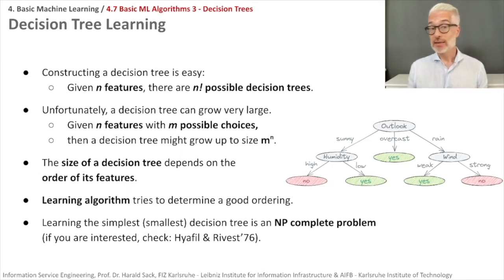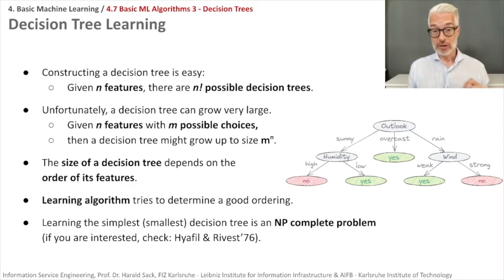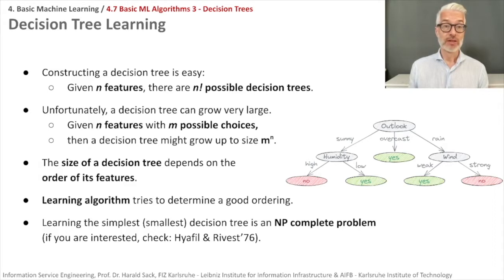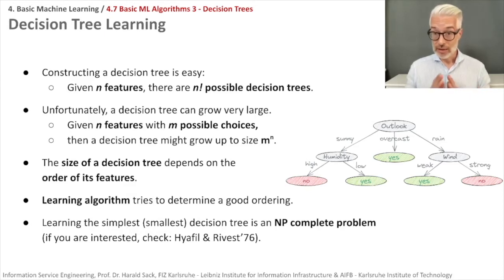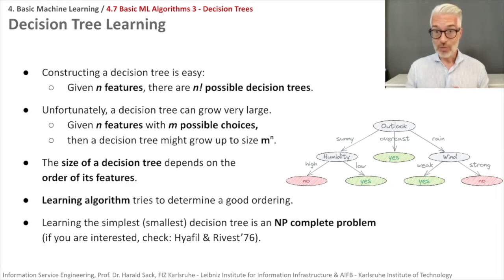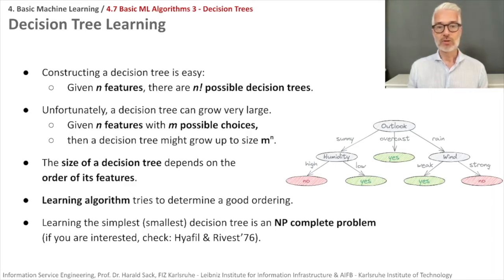The size of the resulting decision tree depends highly on the number of features, because for certain feature orderings the size might blow up, while changing that sequence can make the tree immensely smaller. Finding the simplest and smallest decision tree for a function is an NP-complete problem — a rather hard problem to solve. There is a paper by Hyafil and Rivest from 1976 which proves exactly this.